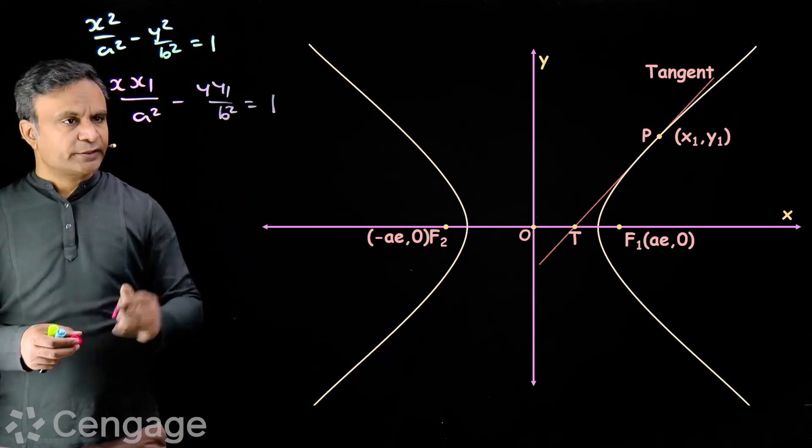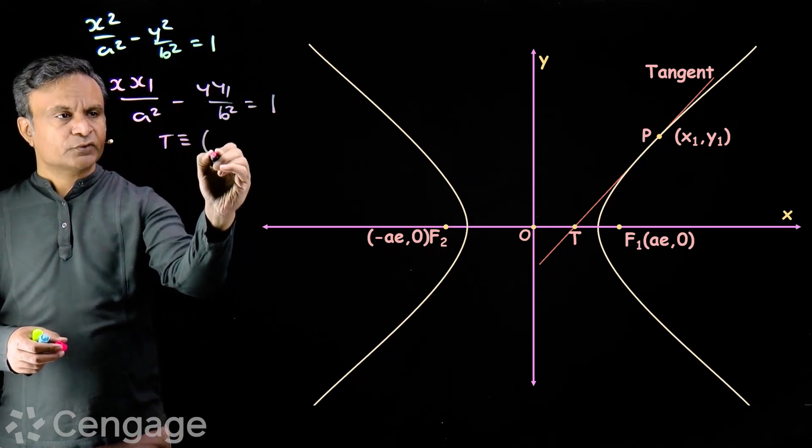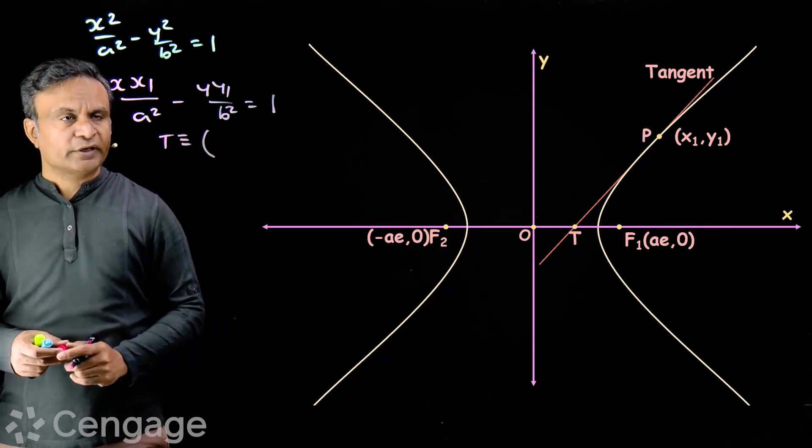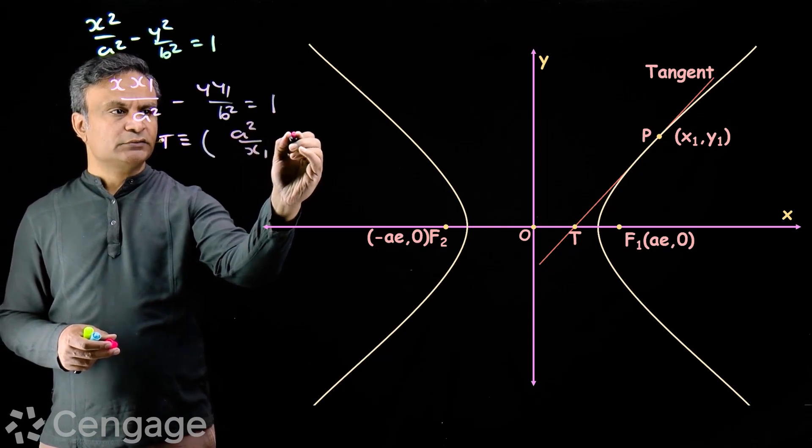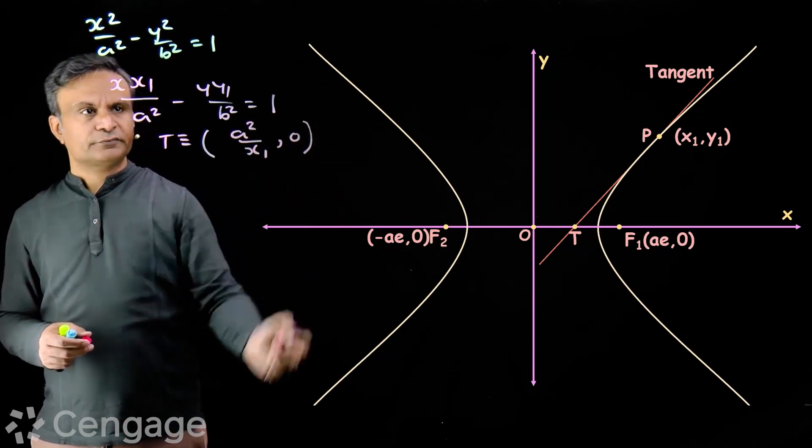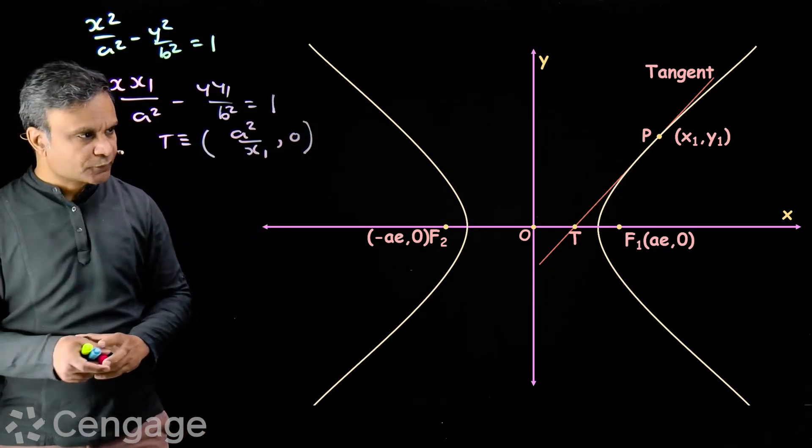Coordinates of point T will be, put y is equal to 0. We get coordinates as a square over x1 comma 0. We will see the coordinates of point T.